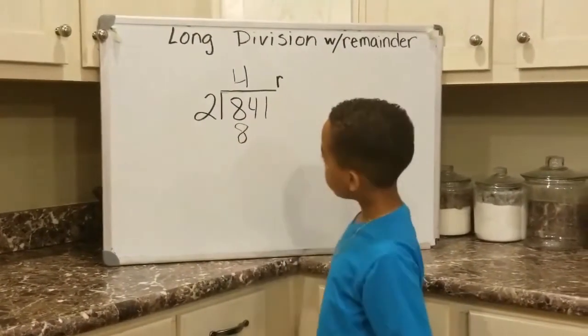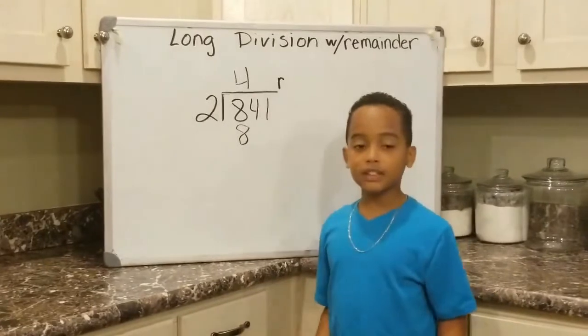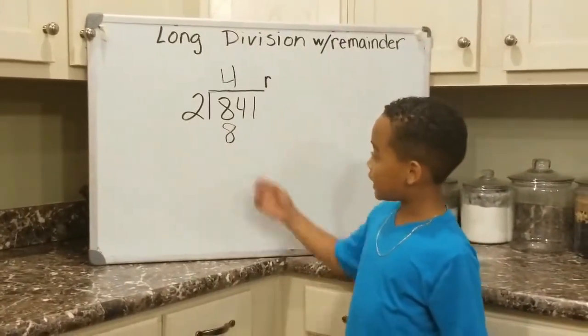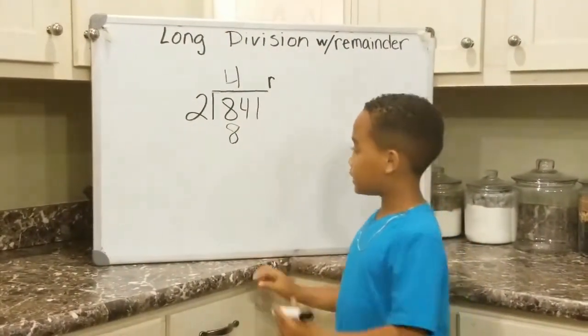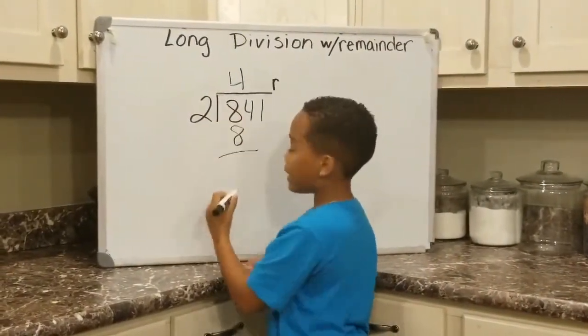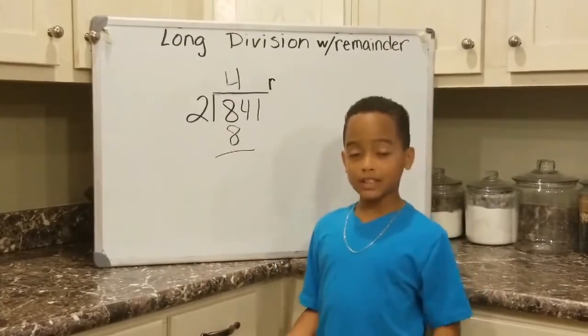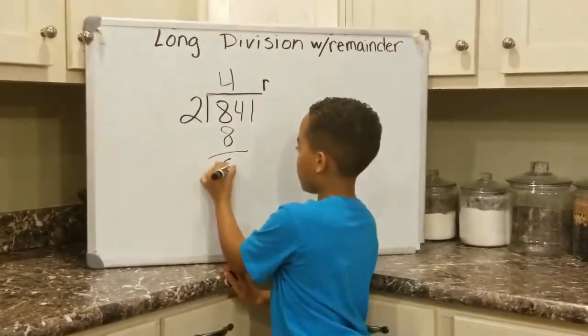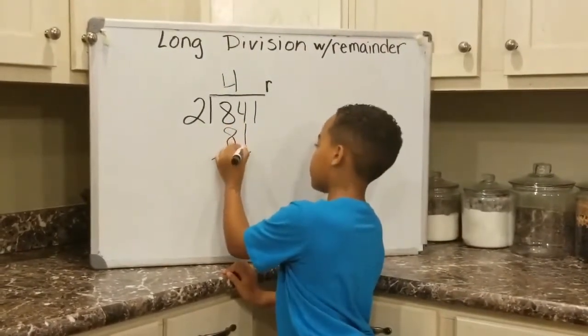OK, now, the next step is to subtract. We're going to subtract 8 from this 8. Now, 8 minus 8, we all know, is 0. Next, we're going to bring this 4 down.